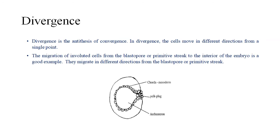Divergence is the antithesis of convergence. In case of divergence, the cells move in different directions from a single point. The migration of involuted cells from the blastopore or primitive streak to the interior of the embryo is a good example — they migrate in different directions from the blastopore or primitive streak.